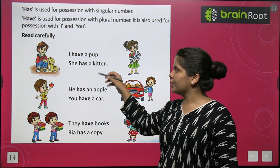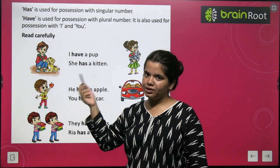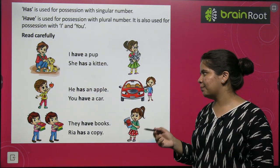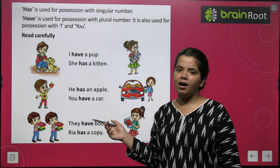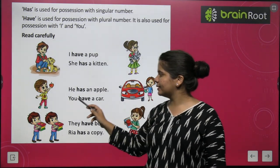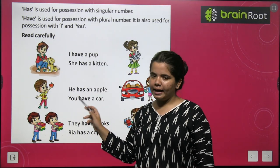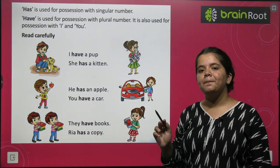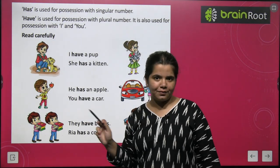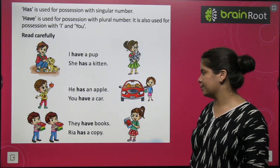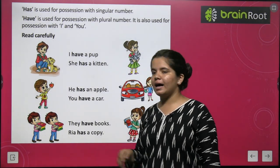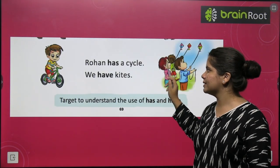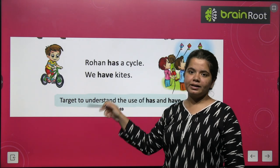I have a pup. She has a kitten — she is singular, right? He has an apple. You have a car. So you can see here: I have a pup, She has a kitten, We have an uncle.